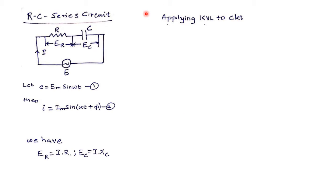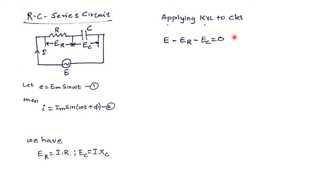Now apply KVL to the circuit. We have three components so we get three voltage drops: E − ER − EC = 0. By observing this equation, it appears to be algebraic, but going further into AC circuits it cannot be only an algebraic sum — it can also be a vector sum. Since I have defined voltage and current as vectors, this equation will be a vector equation. Therefore E, ER, and EC are vectors, and I can write E = ER + EC as a vector equation.